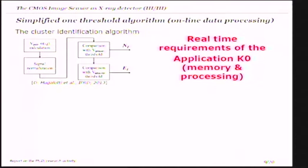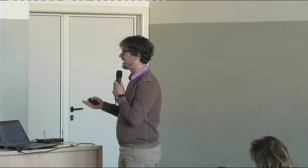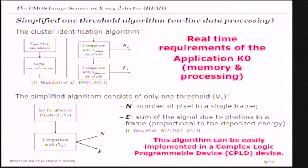The algorithm is not compatible with the real-time and low power requirements of the system. Therefore, a simplified algorithm was developed that consists of just one threshold. We compare an absolute threshold with the raw data of the pixel. The two new observables are the number of pixels above threshold in a frame and the sum of the signals of the pixels above threshold in a frame. These two observables are still correlated to the dosimetric quantities, and the performances of the two algorithms are the same — so we don't lose information by using these two new observables.